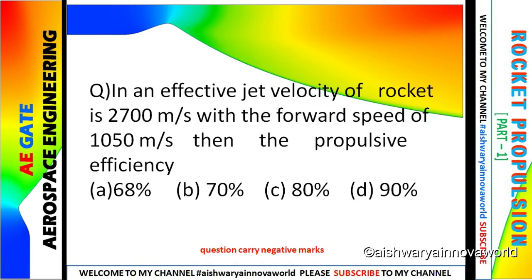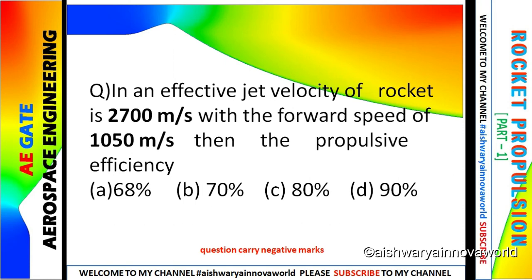Let's come to the last problem of section part one. An effective jet velocity of rocket is 2,700 meter per second with the forward speed of 1,050 meter per second. Then the propulsive efficiency. In this problem they have given options, so obviously it carries negative marking. Let's see what are the things given. The rocket velocity, effective jet velocity VE is given, and forward speed u has been given.